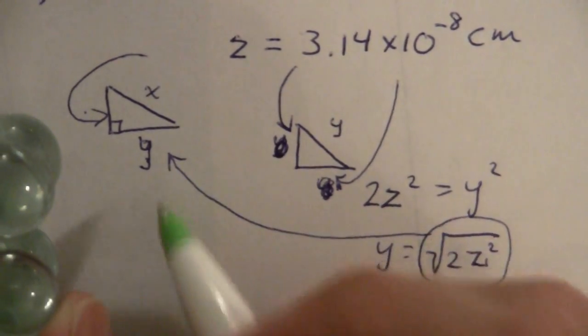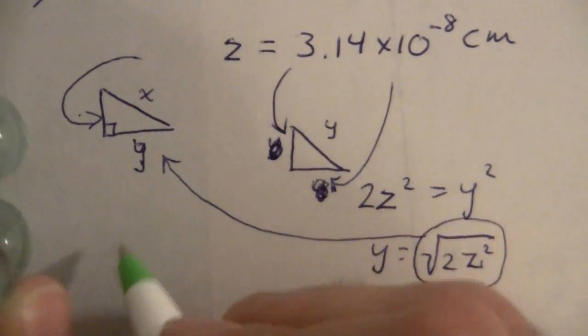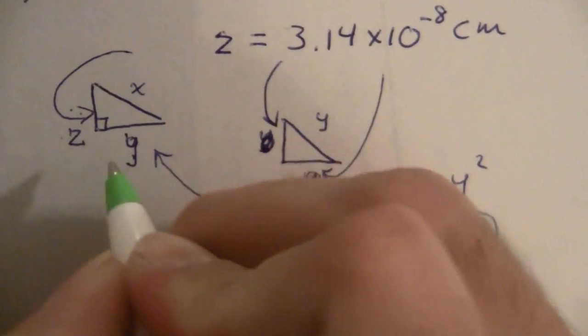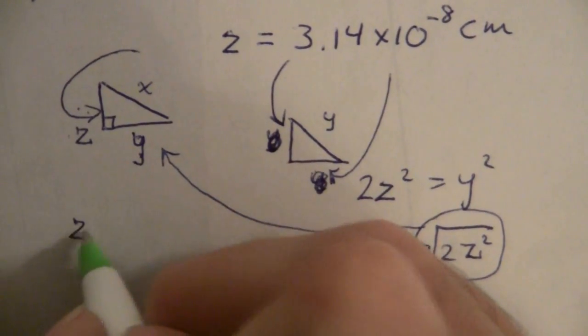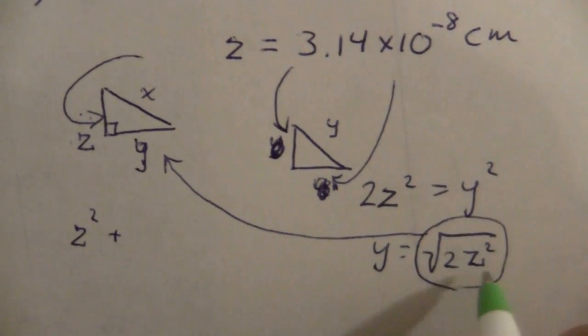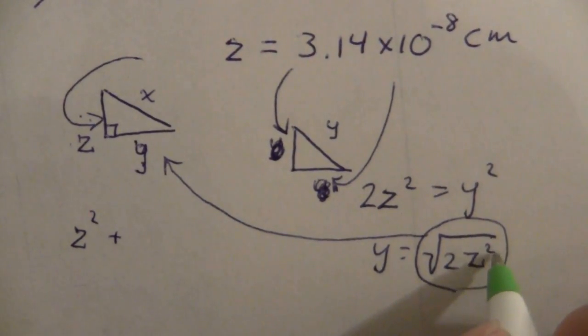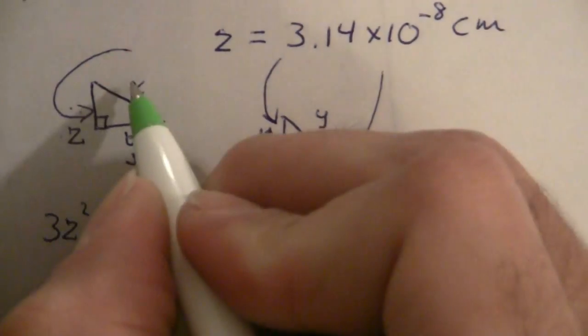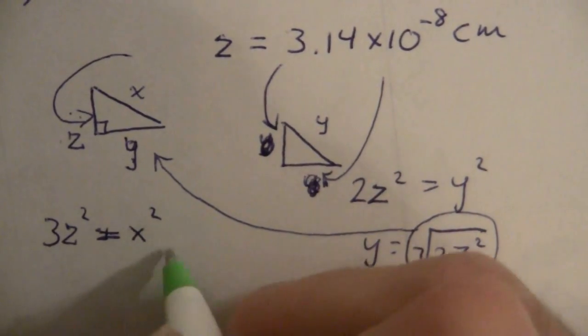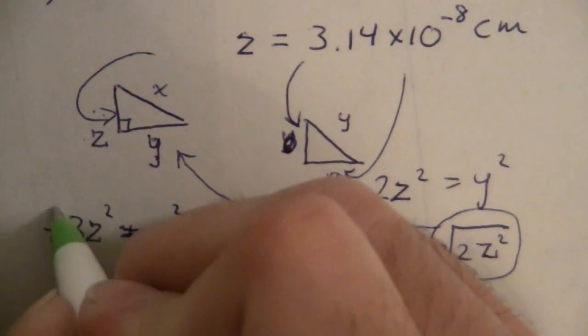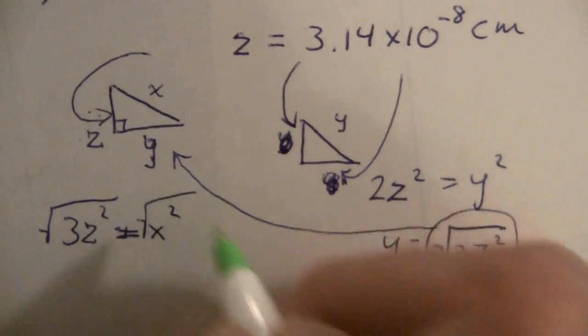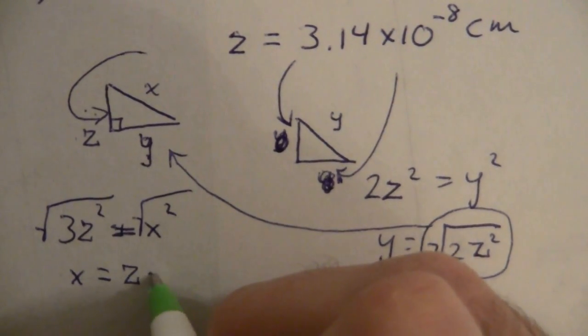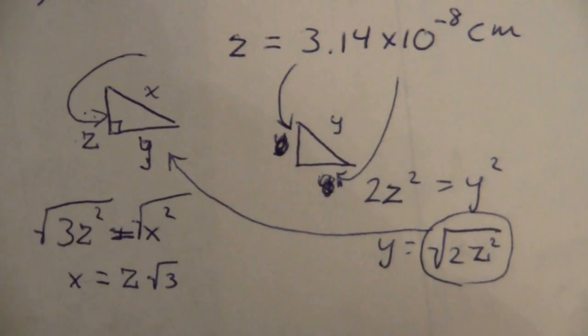So plugging all of this in, I have here, now this is z, so I have z for this dimension. z squared plus y squared or plus this squared, which is 2z squared, so that's going to be now 3z squared equals x squared. x is what I want to find, so let's take the square root of both sides, and I get x equals, I'll just put it out in front, z times the square root of 3.